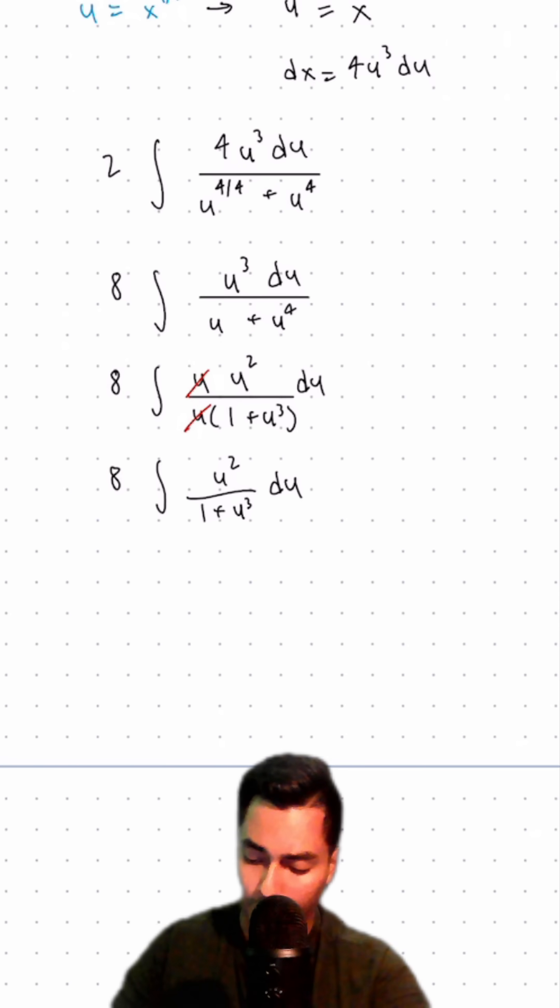Now I'm going to do another substitution. Let v equal that denominator, 1 plus u cubed. Take that derivative: dv equals 3u squared du. So 1/3 dv will be u squared du.